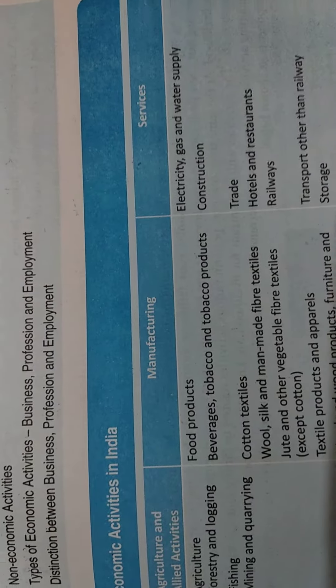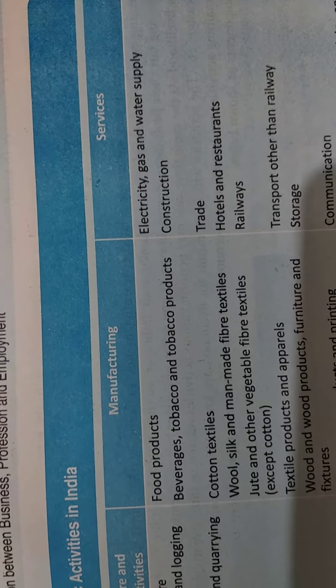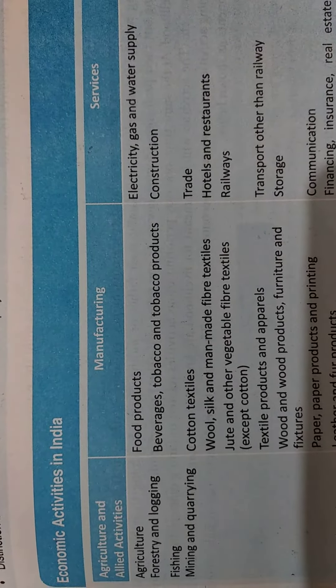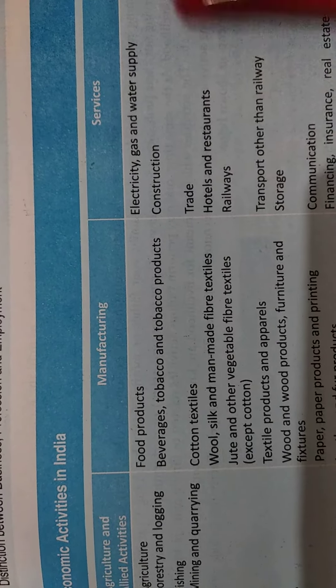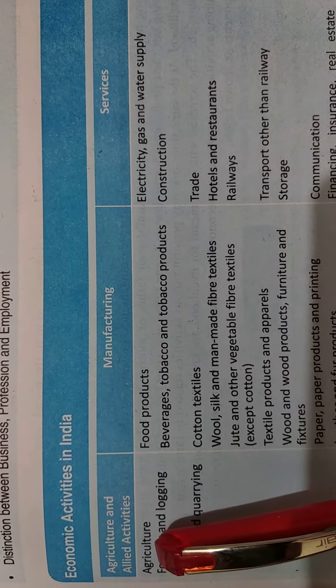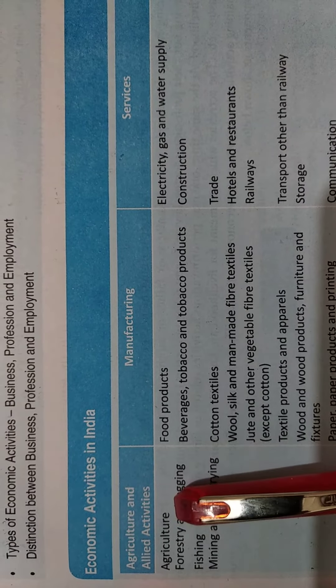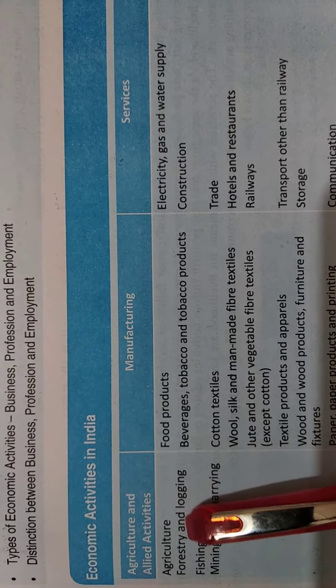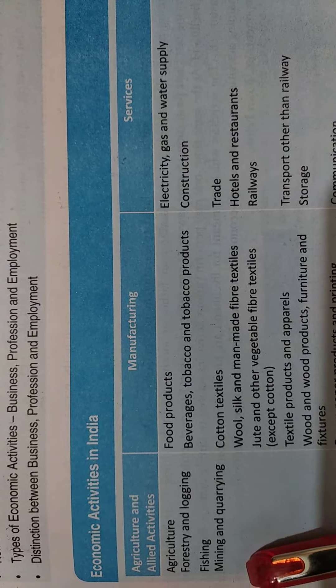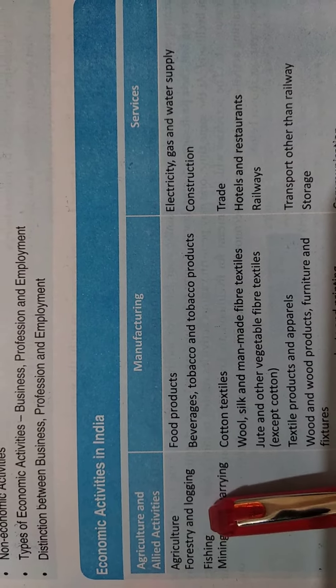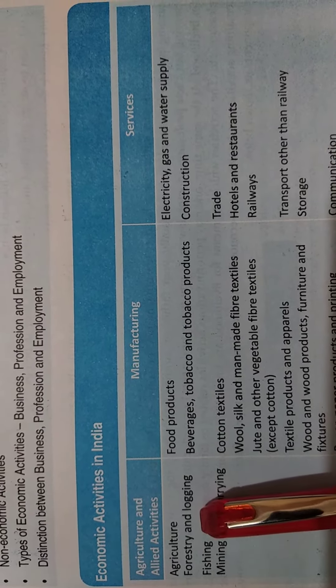Economic activities in our country can be classified in three ways, and you see all these in our day-to-day life. The first is agriculture and allied activities — it may be fishing, it may be mining, it may be forestry, or any agricultural activity.